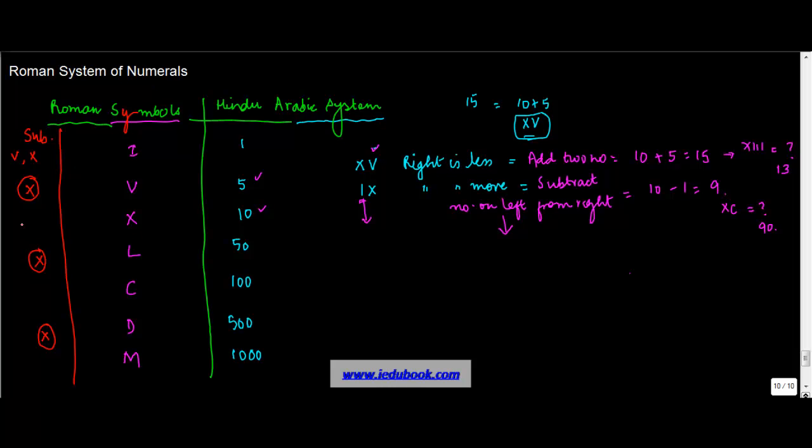So let me just put it in the round table so that you don't confuse this with X. Now, X can be subtracted only from L and C. And C can be subtracted only from D and M. So these are the rules of the subtraction.